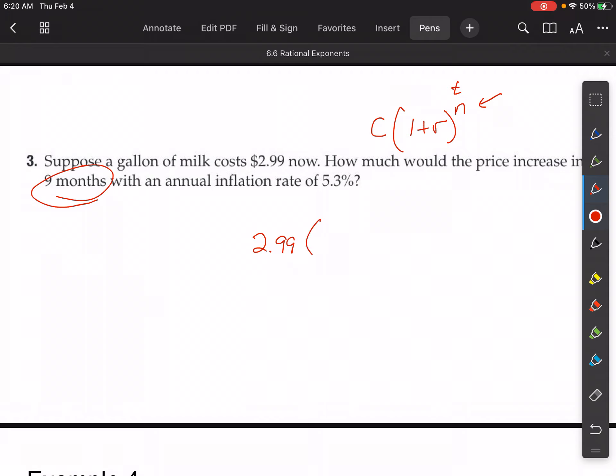So I can do 2.99 times 1 plus the rate, 0.053, all to the time in years. Well, the time in years is nine months, that's nine out of twelve, I guess, which would be three-fourths.